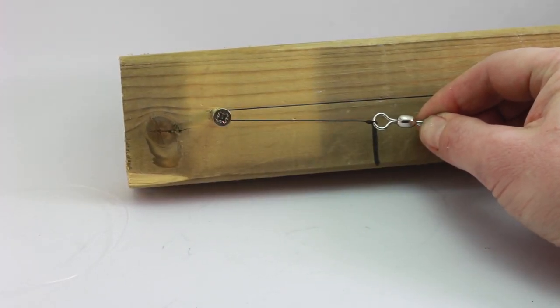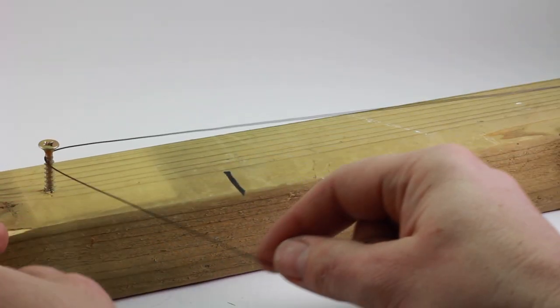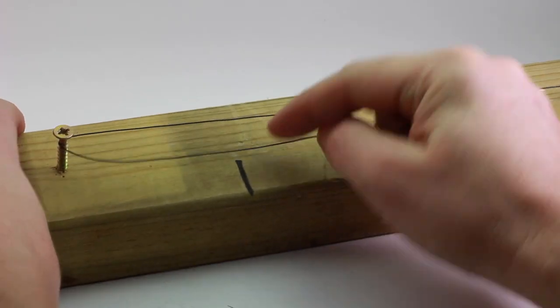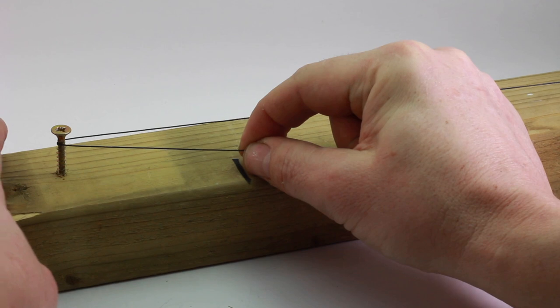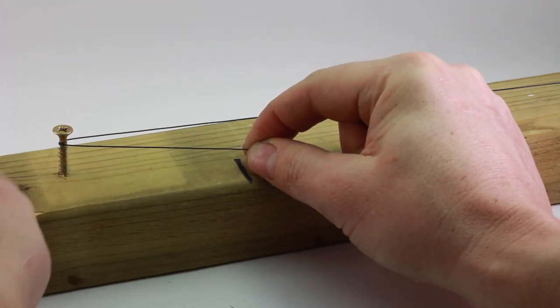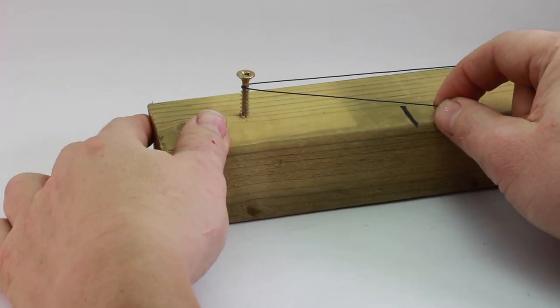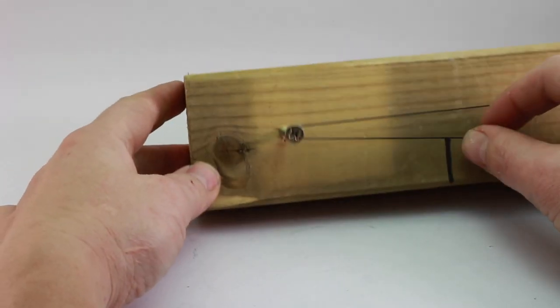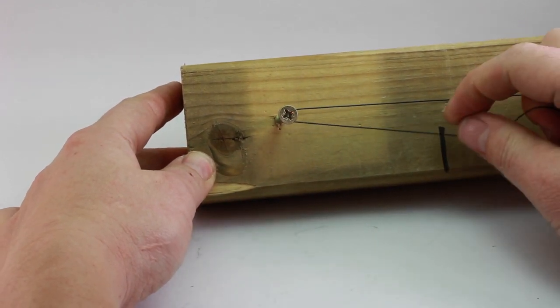So you don't get any slack in the line. What we're going to do is use it again for the second snood, which we want to be exactly the same. I've got the same length there. You could measure it as well, but we're just using this as the measurer. You see where the black mark is there - that's obviously the point where I want to have the swivel coming off.